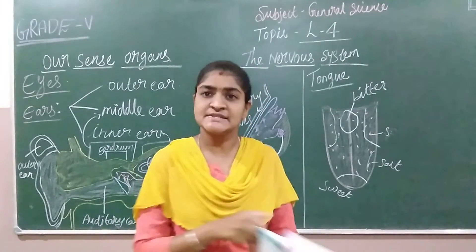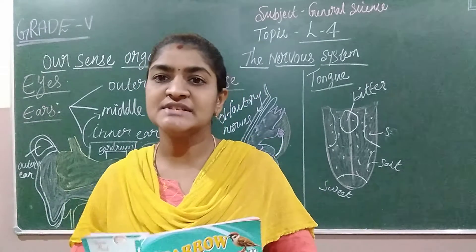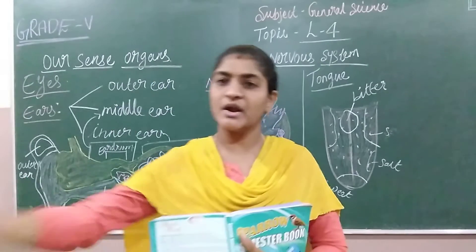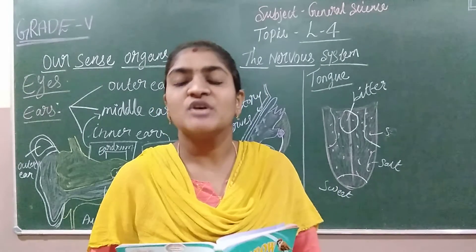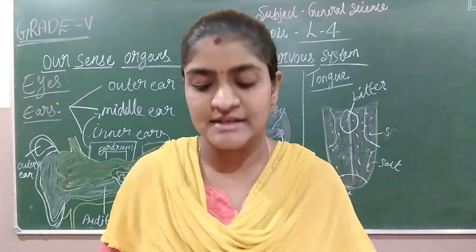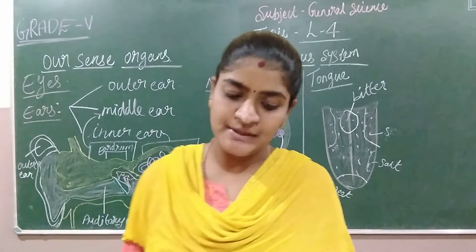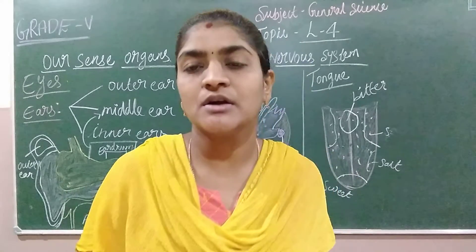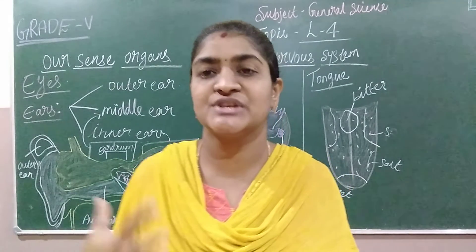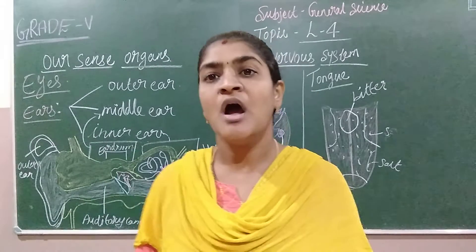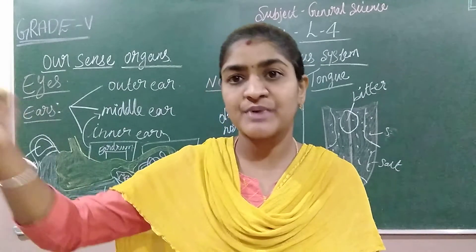Next we are going to see about the skin. The skin is one of the largest organs in our body. Millions of tiny nerve endings are present on the skin. Wherever you get hurt, you can feel pain because more nerve endings are present in the skin. The nerve endings can detect sensations like pain, heat, cold, pressure, and touch. This sensation is sent to the brain using our nerves.